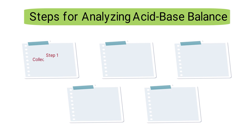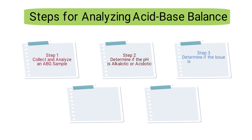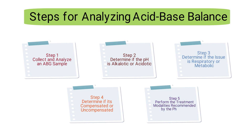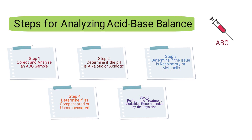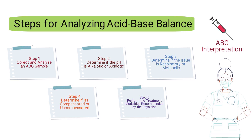The steps for analyzing acid-base balance include: step one, collect and analyze an ABG sample; step two, determine if the pH is alkalotic or acidotic; step three, determine if the issue is respiratory or metabolic related; step four, determine if it's compensated or uncompensated; and step five, perform the treatment modalities recommended by the physician. This analysis involves ABG interpretation, one of the most valuable skills of respiratory therapists and students.